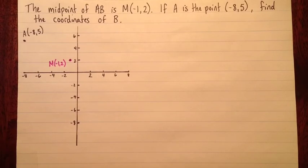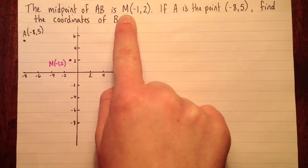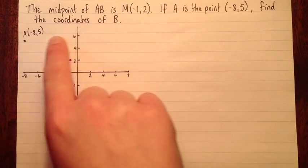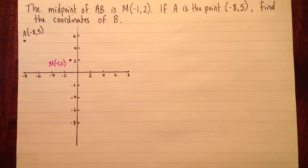So it's basically working backwards. Here's a question. What we know is that the midpoint of a certain line segment AB is this point M at (1,2). We know that A is the point (-8,5), and we're asked to find the coordinates of B.